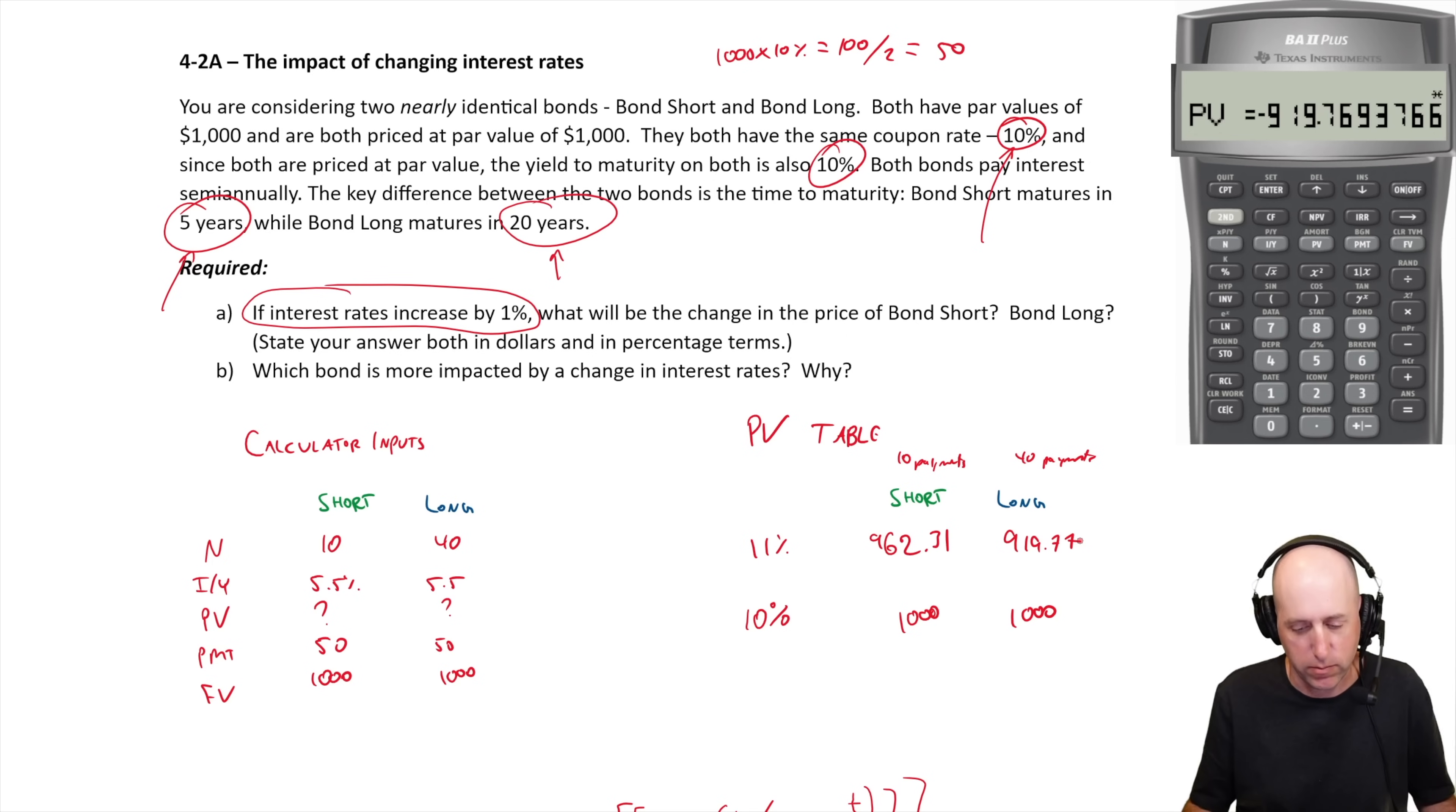The question asks if the interest rates increase by one percent, from 10 to 11 percent, what will the change be in the price of Bond Short and Bond Long? So 1000 minus 962, 1000 minus 919.77. I'll do the 919 because it's already in my calculator. A thousand minus that is 80.23, our price went down by 80.23.